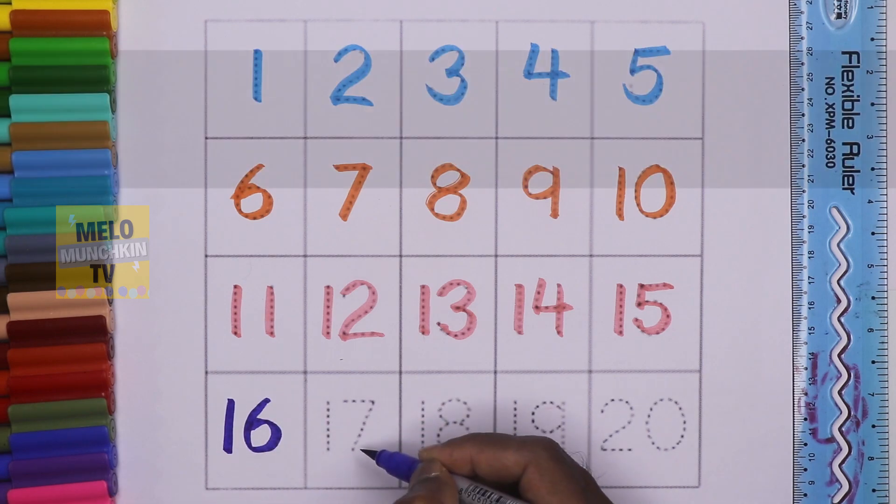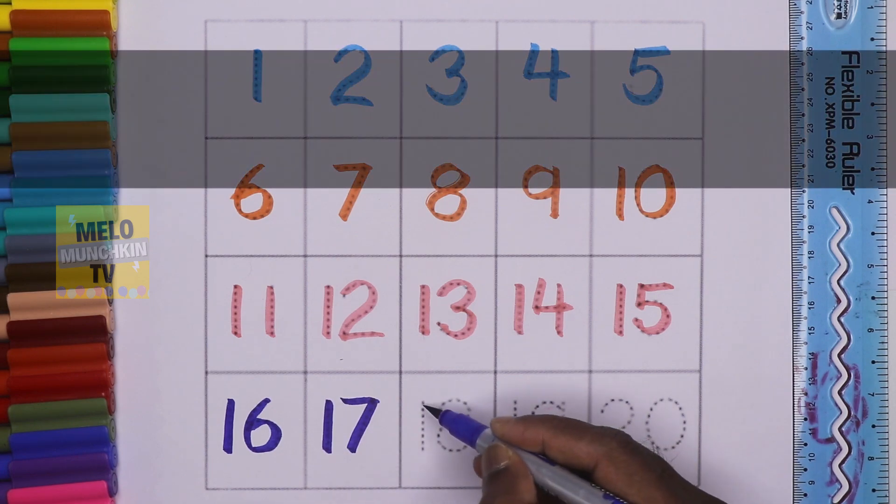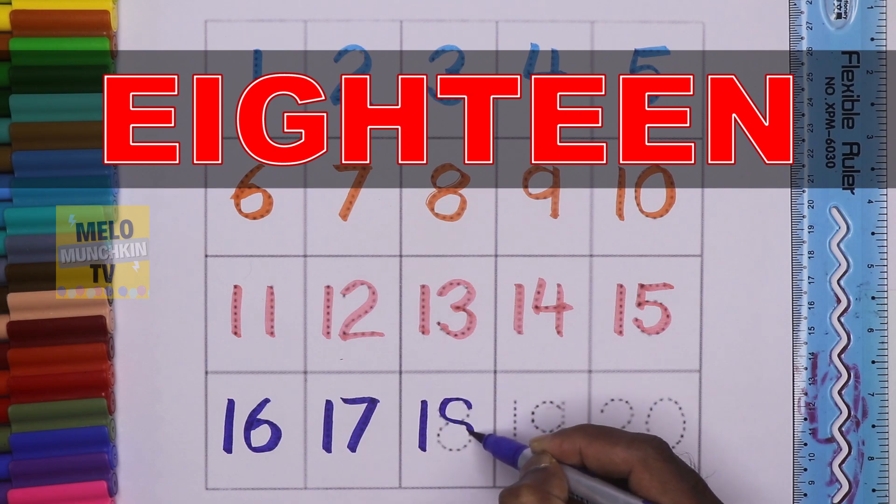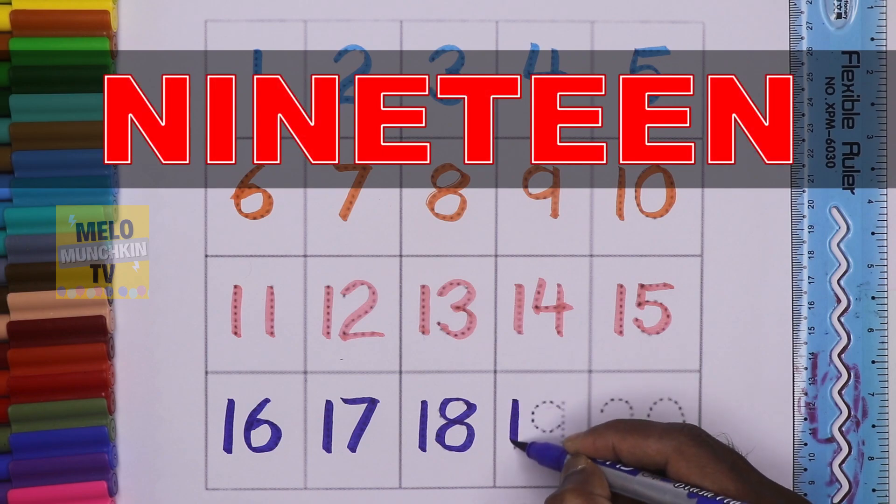This is number 17, S-E-V-E-N-T-E-E-N, 17. This is number 18, E-I-G-H-T-E-E-N, 18. This is number 19, N-I-N-E-T-E-E-N, 19.